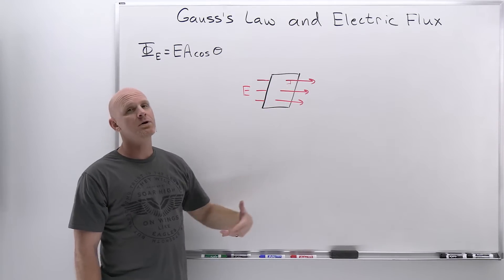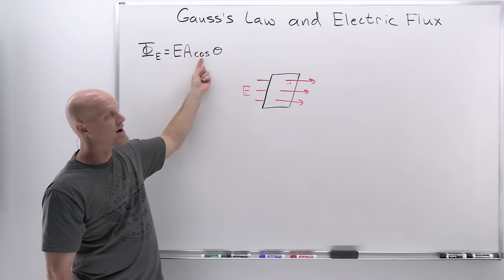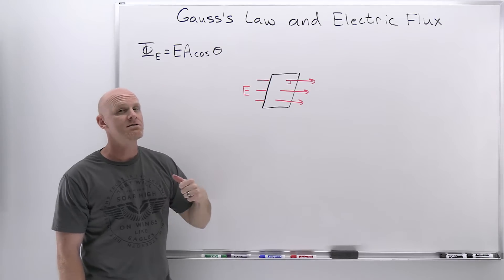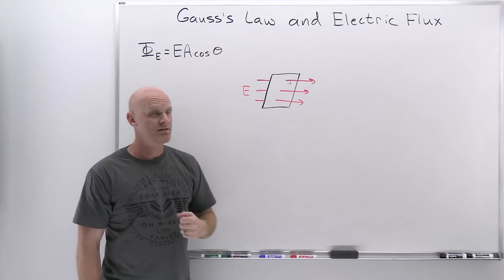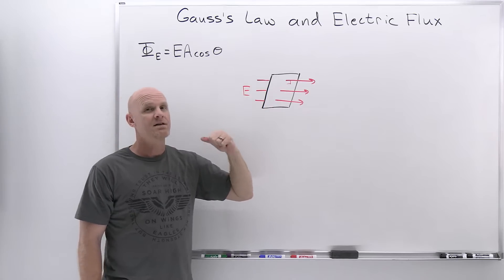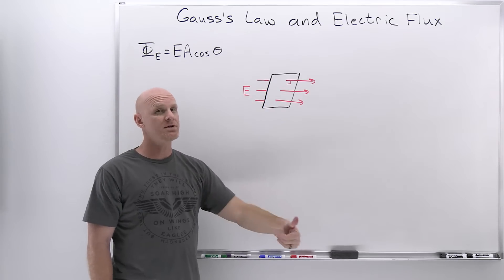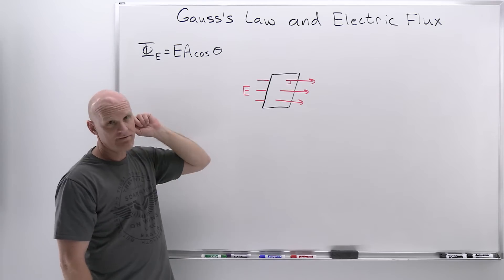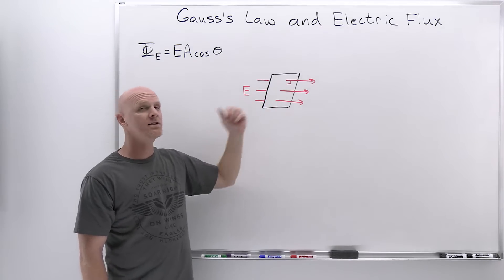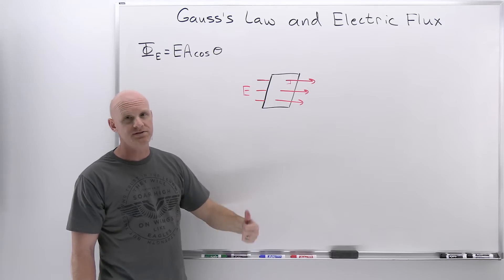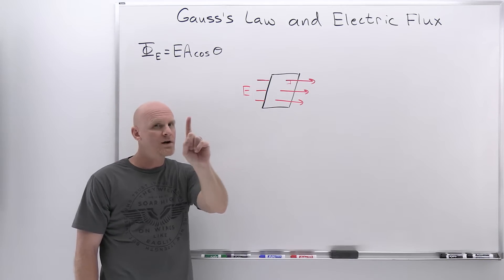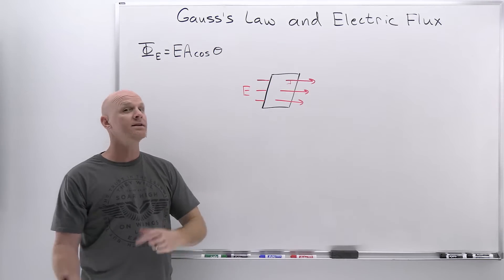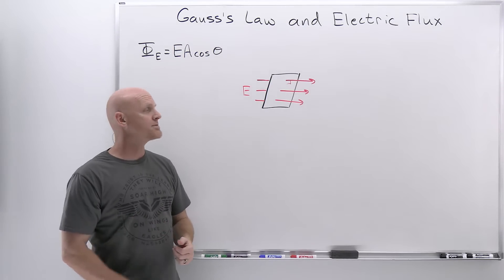If the field lines are not coming through perpendicular, you have to factor in that angle using cosine of theta. Theta is not the angle the electric field makes with the surface — theta is how far from the perpendicular, how far from the normal. So if a field line is at 89 degrees from the surface, that means it's only one degree from being perpendicular, and the theta you would use is one degree, not 89 degrees.